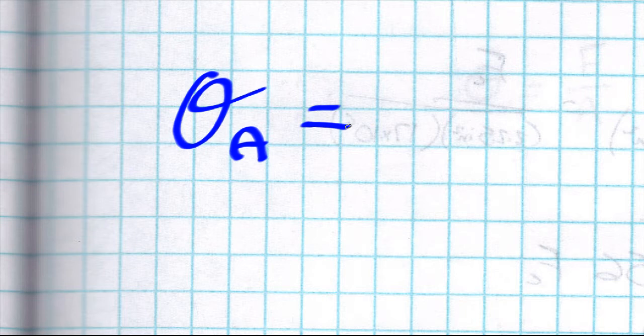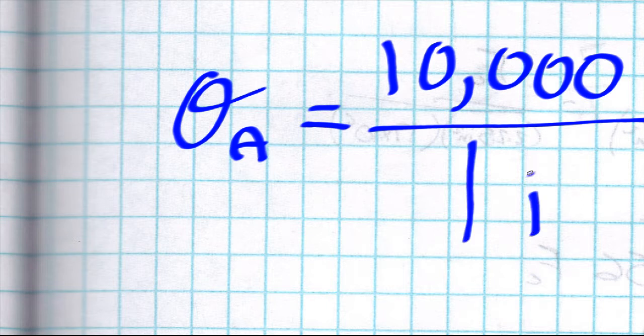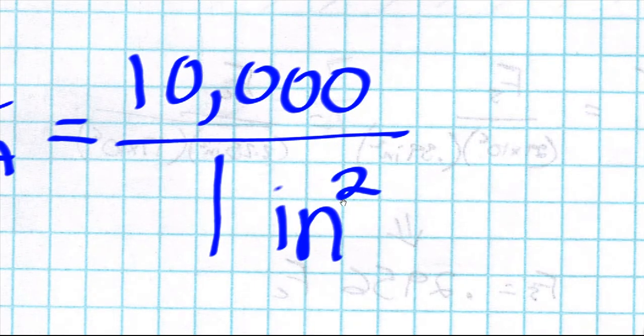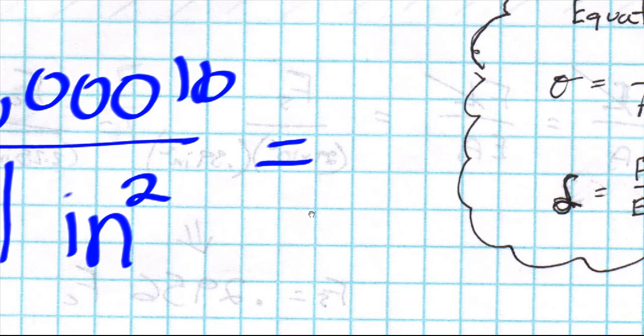So the stress of A is going to equal 10 kips or 10,000 pounds all over the area which we've assumed is one inch squared. And as you can see this is supposed to be in pounds. So when I calculate this, easy enough, that's going to be 10,000 psi or 10 ksi.